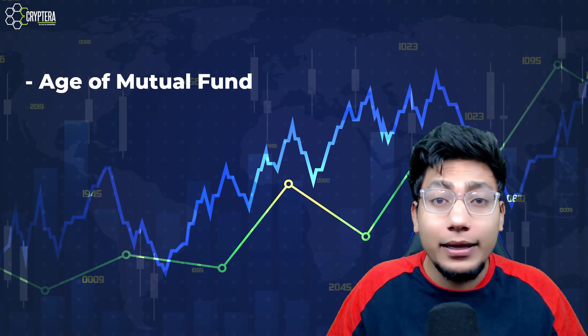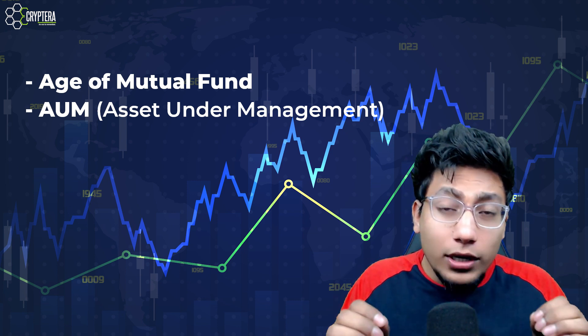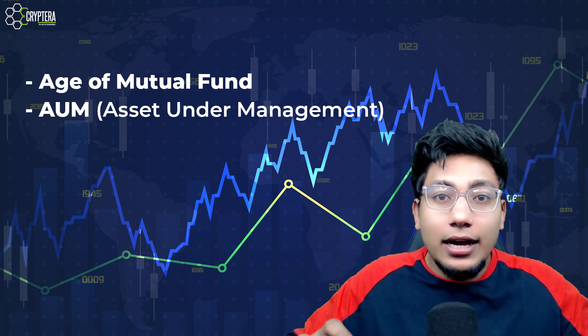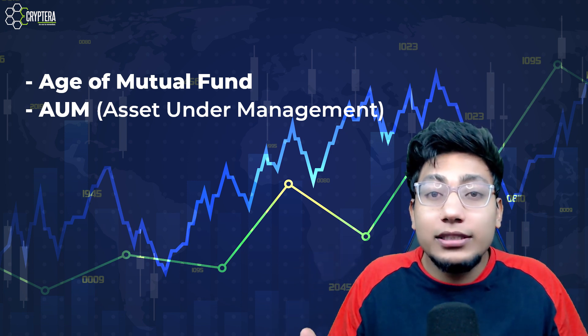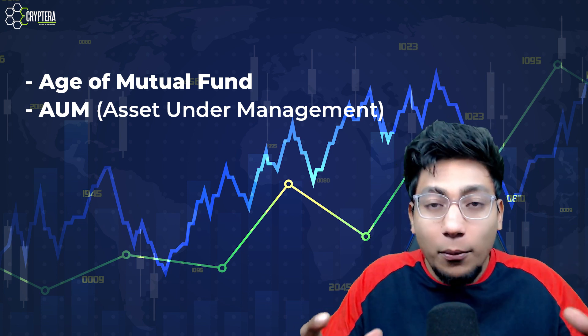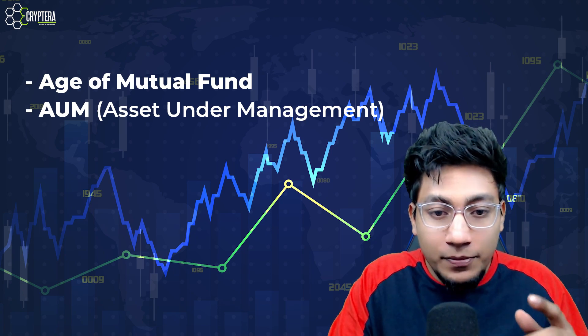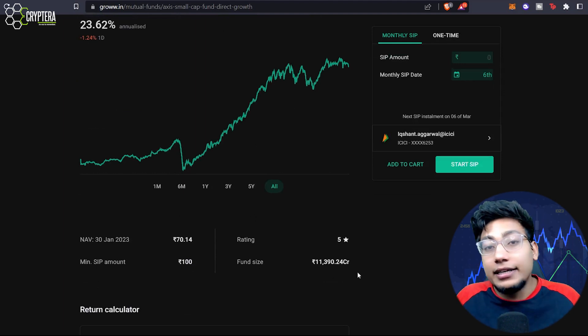The next parameter on my list is AUM — Asset Under Management. What does it mean? This is the total market value of the assets being managed by the mutual fund company. In simple words, all of us together are putting money into the mutual fund, and all that money is what the mutual fund company is going to deploy into the stock market — because it is an equity mutual fund. So the total net worth of that money — how much money is going into the stock market — this is AUM, Asset Under Management.